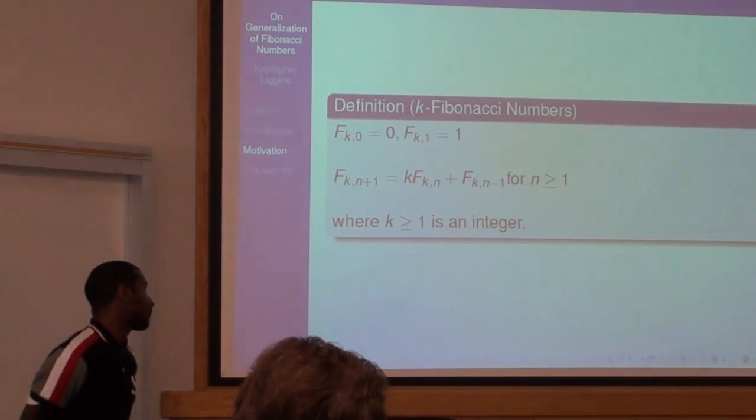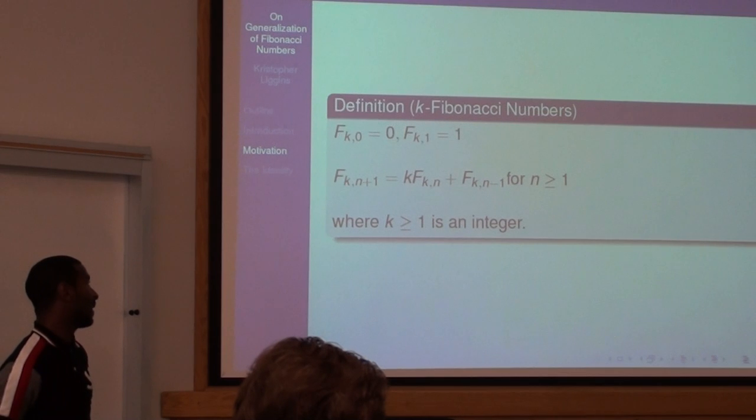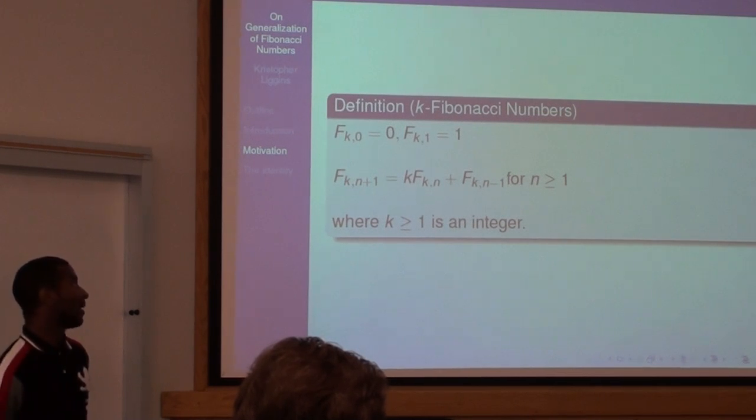So F_k,n+1 equals k times F_k,n plus F_k,n-1 for everything greater than or equal to one, where k is greater than or equal to one.